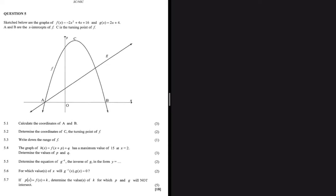Sketched below are the graphs f(x) = -2x² + 4x + 16 and g(x) = 2x + 4. A and B are the x-intercepts of f, and C is the turning point of f. Question 5.1: calculate the coordinates of A and B.